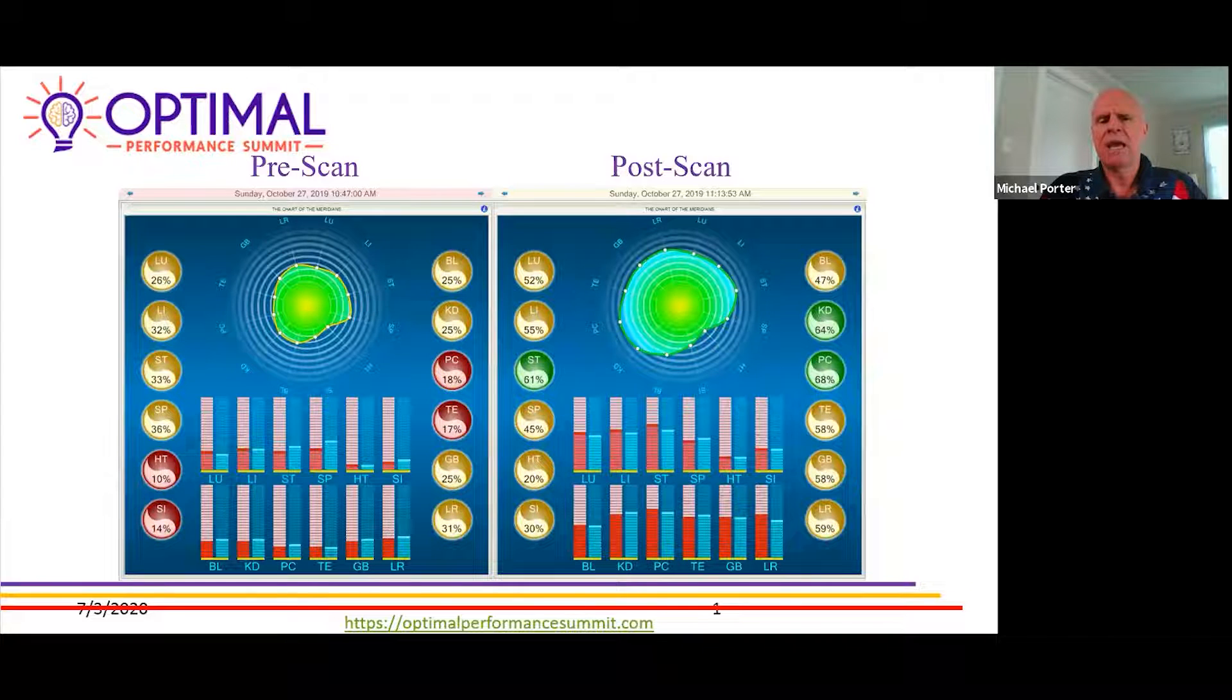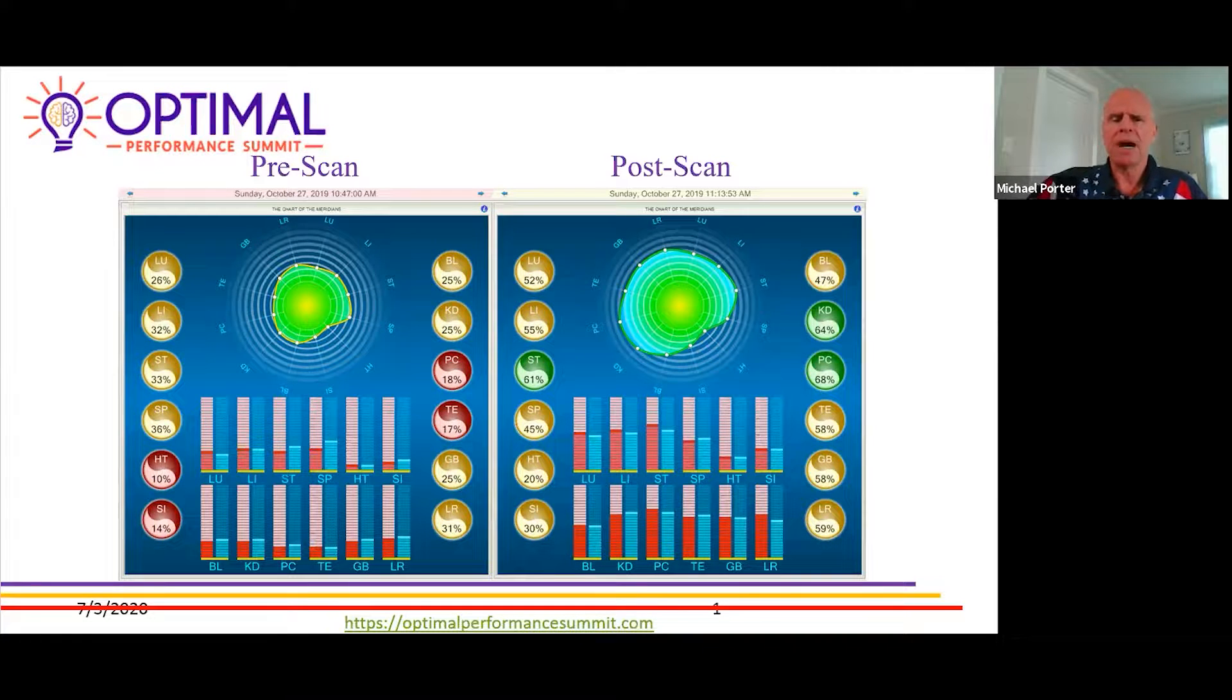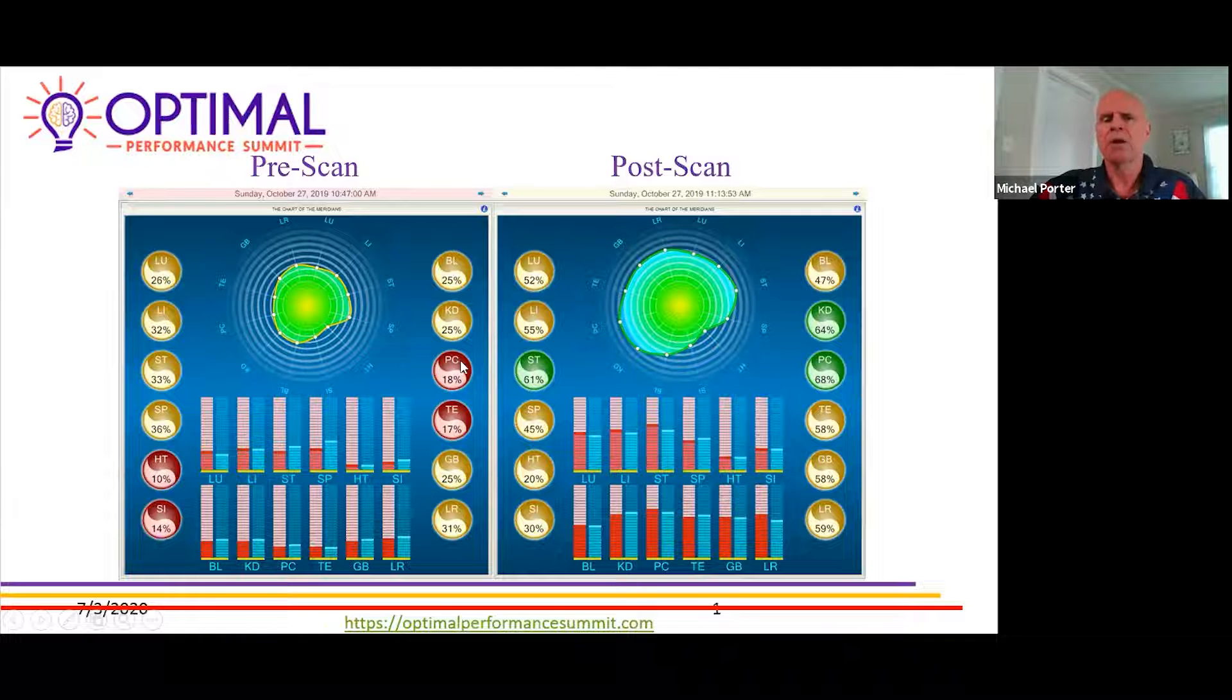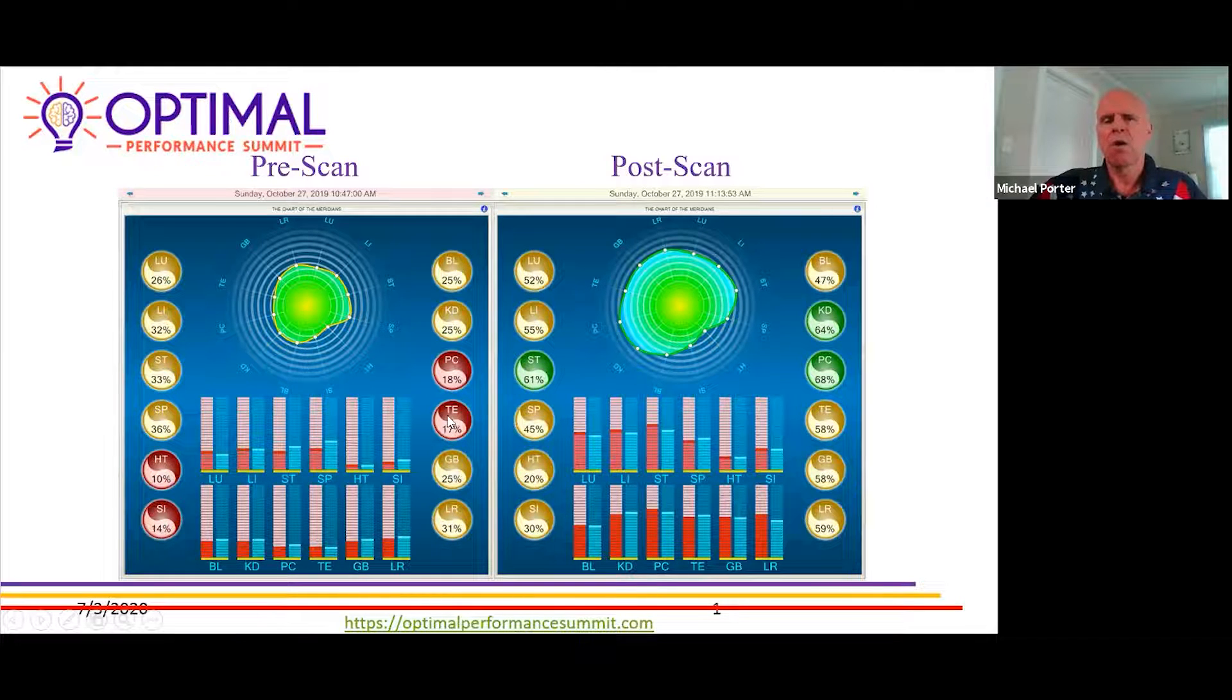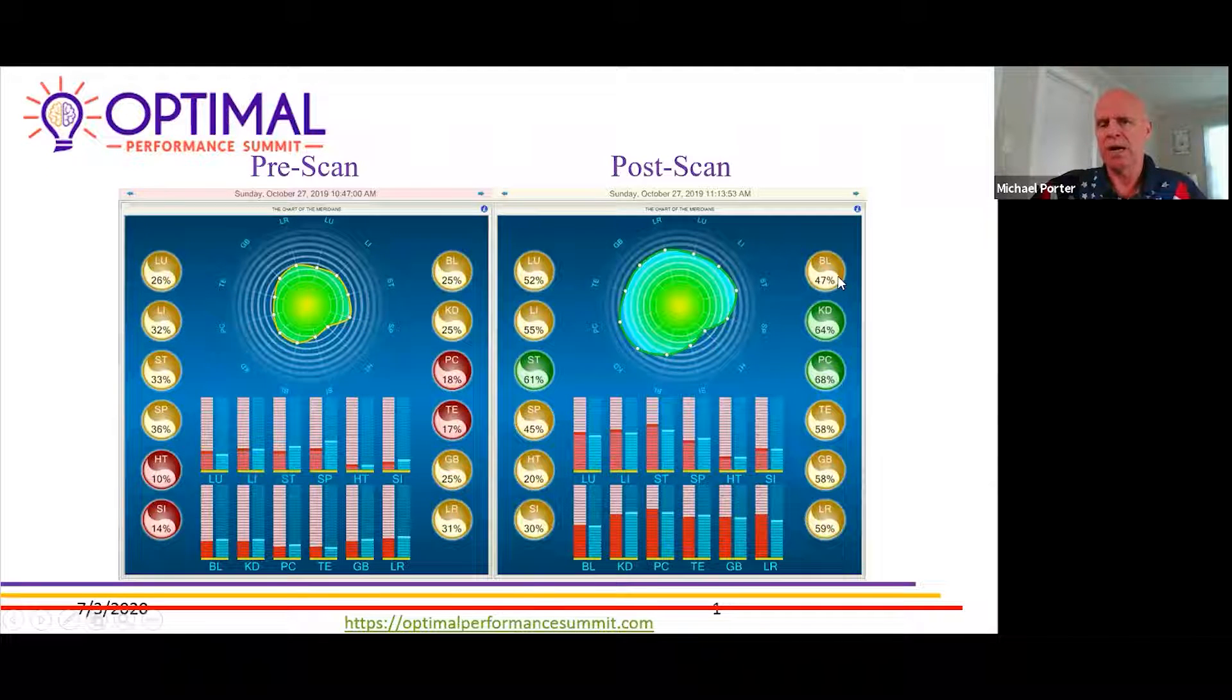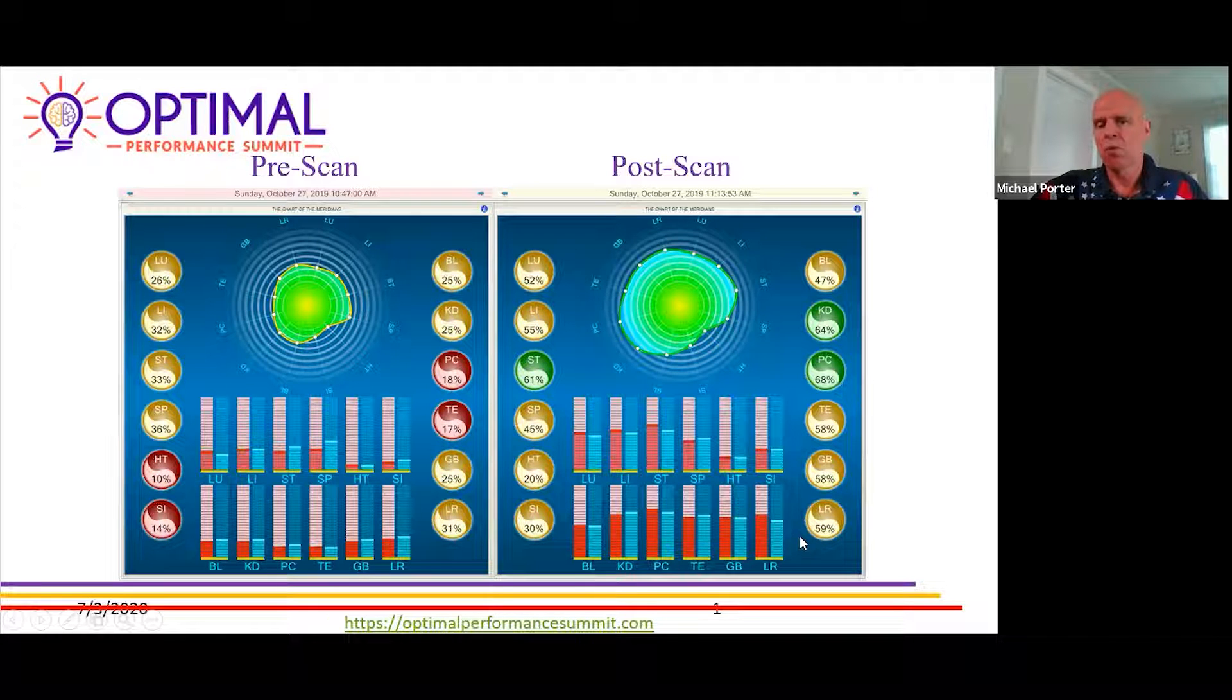This is an example of these 12 meridians in the body. We've got the lungs, the large intestine, the stomach, the spleen, the heart, the small intestine, the bladder, the kidneys, the pericardium, the triple warmer, gallbladder, liver. All of these should be above 60 percent. We can see percentage-wise where they're at and we can see percentage-wise what happened after one BrainTap session.